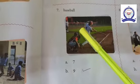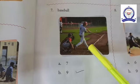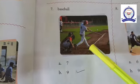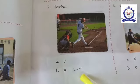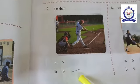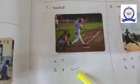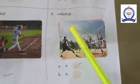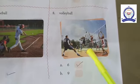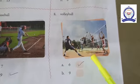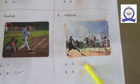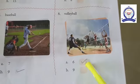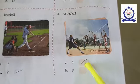The seventh one is baseball — there are 9 members. The correct answer is nine. The eighth one is volleyball — there are 6 members. The correct answer is six members.